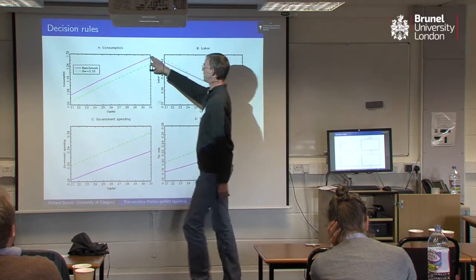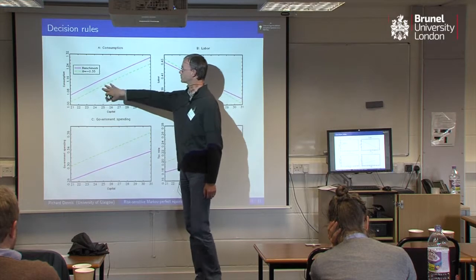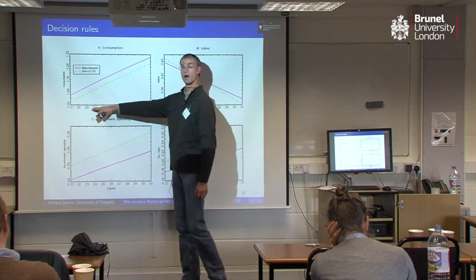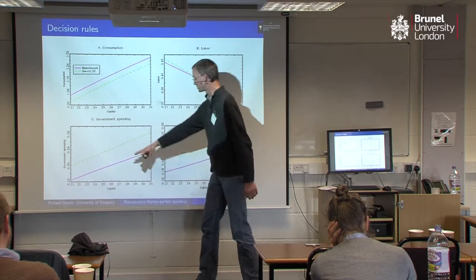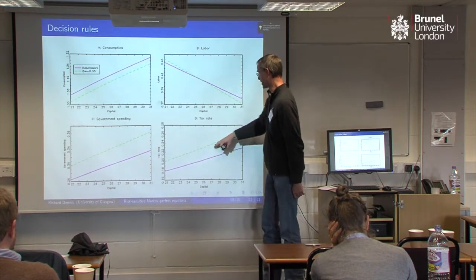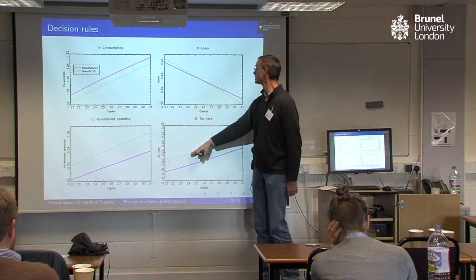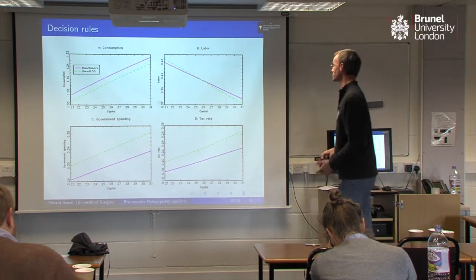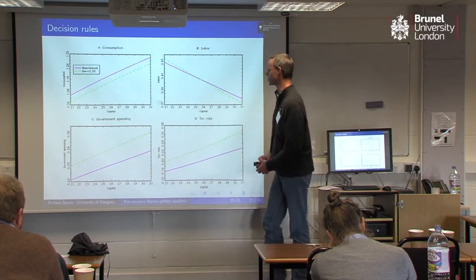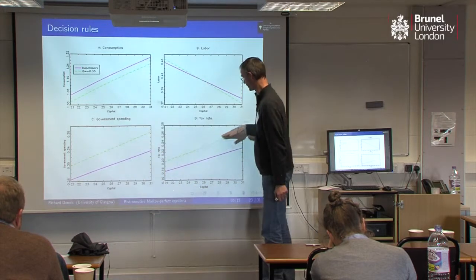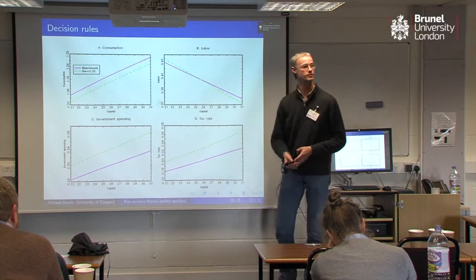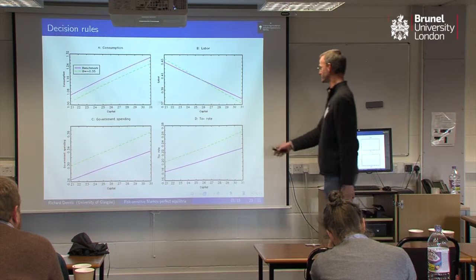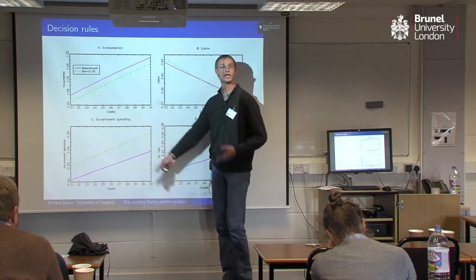What's happening to decision rules? The purple line is for the benchmark model where theta equals zero, and the green line is where theta is minus 0.35. So what is risk sensitivity doing? Well, for all levels of capital — which is to say for all levels of wealth — households choose to consume less. Government spending rises, and that increased government expenditure is financed by a higher marginal tax rate. The behaviour of labour is a little bit more complicated because I'm adjusting beta to keep the capital stock constant, so it's a change in slope rather than a parallel movement. There's also a slight increase in the steepness of the taxation curve, so taxation is becoming slightly more progressive. A fiscal authority that's concerned about the welfare of households — where the household is a risk-sensitive decision maker — will increase taxes and provide households with government services as a substitute for private consumption.